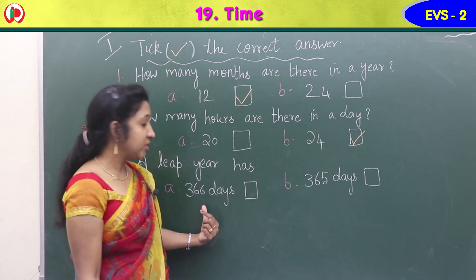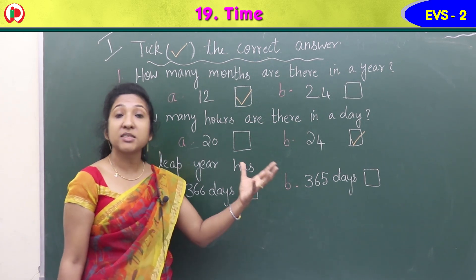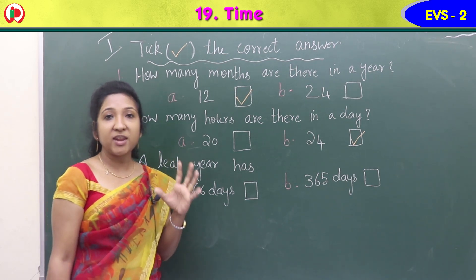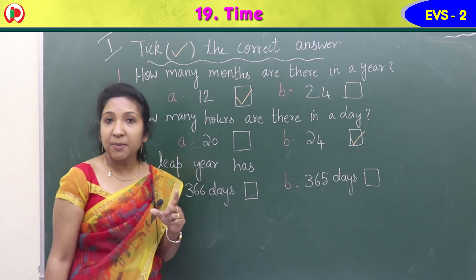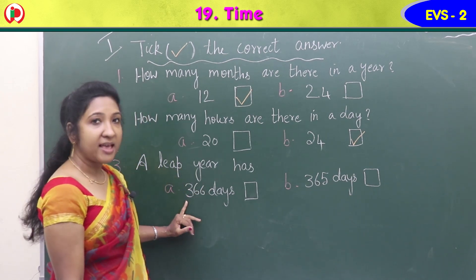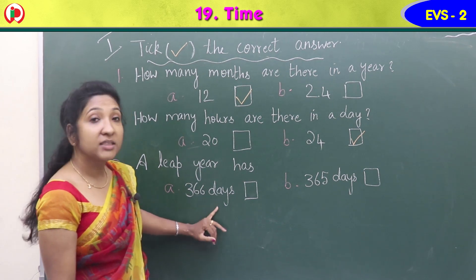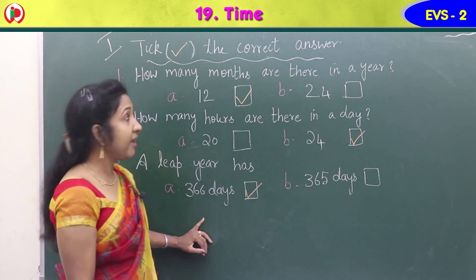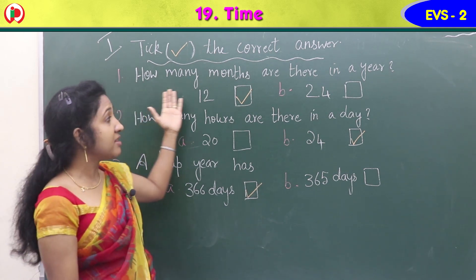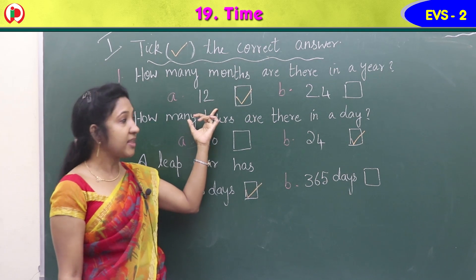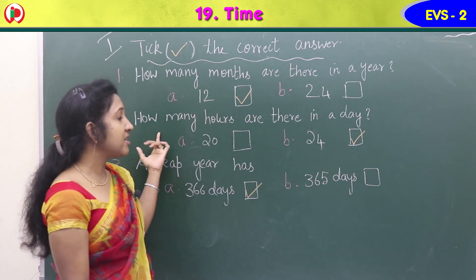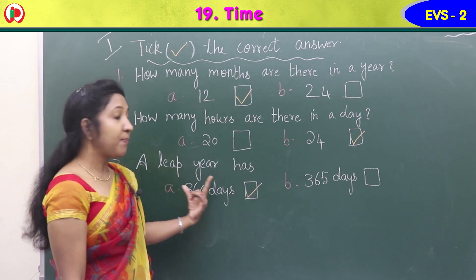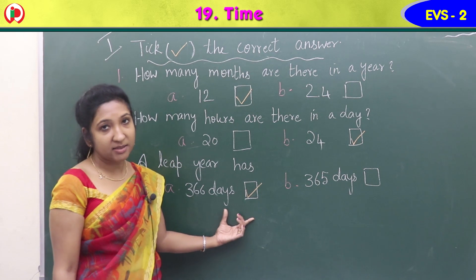Third question: a leap year has — option A is 366 days, option B is 365 days. In a leap year we have one extra day. Every year we have 365 days, but in a leap year we have 366 days. Option A is the correct answer. Put a tick mark.